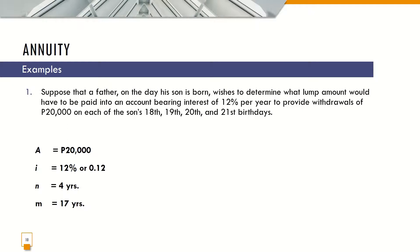For example, suppose that a father, on the day his son is born, wishes to determine what lump amount would have to be paid into an account bearing interest of 12% per year to provide withdrawals of 20,000 pesos on each of the son's 18th, 19th, 20th, and 21st birthdays. Given the withdrawals is 20,000, so that is A. Then I is 12% or 0.12 in decimal form per year. N is 4 years, from 18th, 19th, 20th, and 21st, the N wherein the annuity payments are being made. And then M is 17 years.